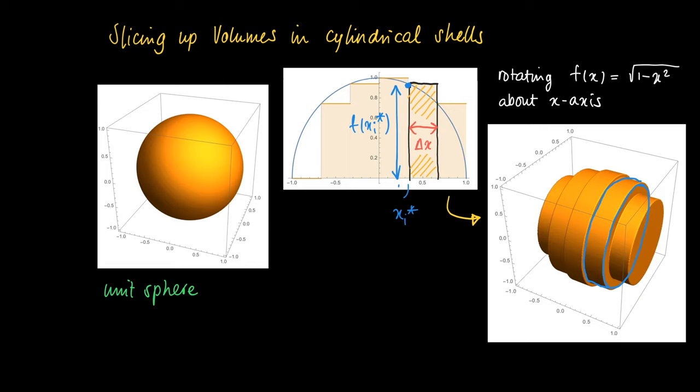So we know by choosing a sample point x i star we know the radius f(x i star). So this makes it possible to calculate the volume of such a cylindrical shell.